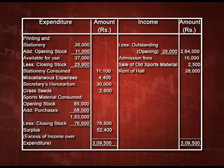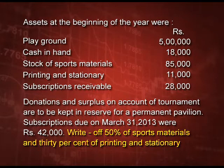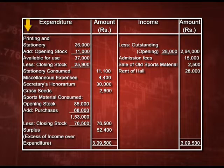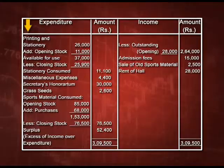Let us revisit the question. Stationery of rupees 26000 is given, and in the additional information it states write off 30 percent of printing and stationery, with opening stock of stationery rupees 11000. So in the solution, we first added the opening stock of 11000, giving rupees 37000. Then 30 percent of 37000 is rupees 11100 — so the closing stock will be rupees 25900. The stationery consumed figure, after adding and deducting stock, is rupees 11100.